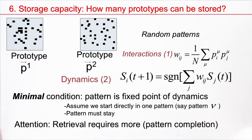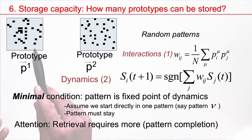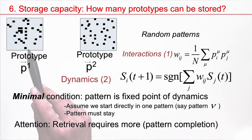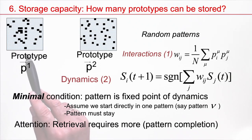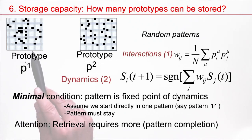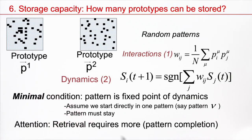What we want is that we start in an image that's noisy — a noisy version of one of the prototypes — and then it corrects and gives back the pure prototype. That's the task.